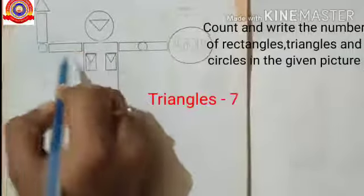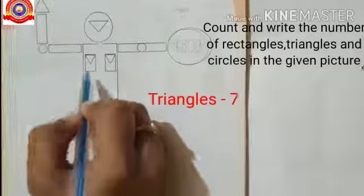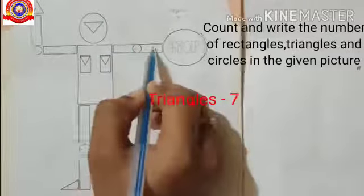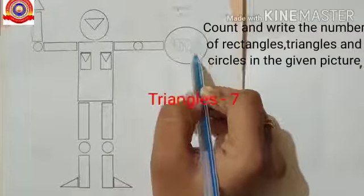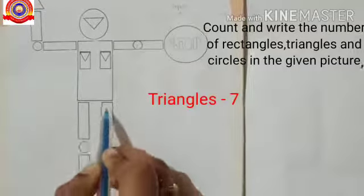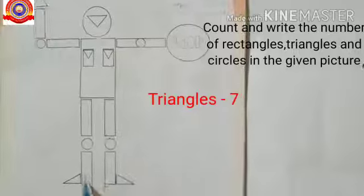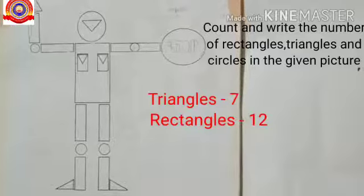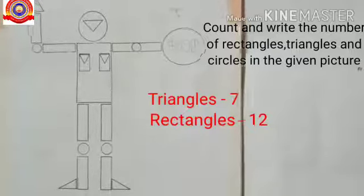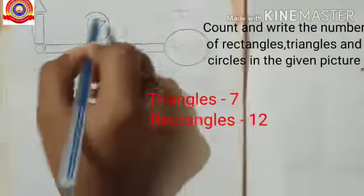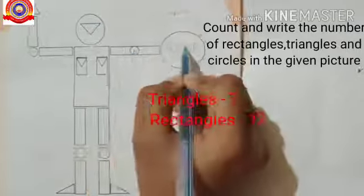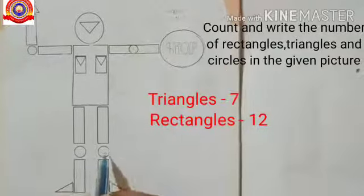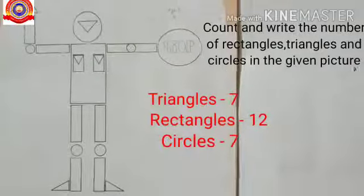How many rectangles are there? One, two, three, four, five, six, seven, eight, nine, ten, eleven, twelve. And how many circles are there? One, two, three, four, five, six, seven. Seven circles.